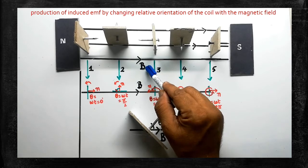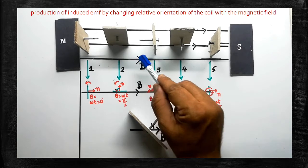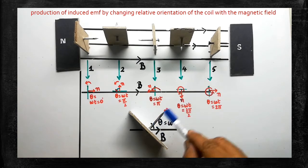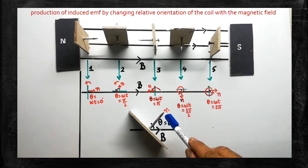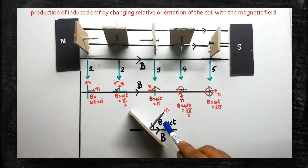Here are two pole pieces — north pole and south pole — within which a magnetic field is present. A large number of magnetic lines of force are passing through; a few lines are drawn just for representation. B is the strength of the magnetic field and the direction of the magnetic field is shown by arrowheads. Theta is the angle between the direction of the magnetic field and the normal to the coil.